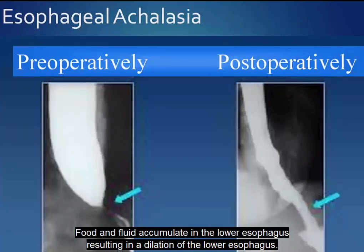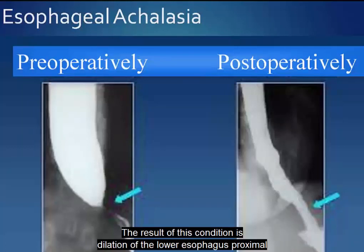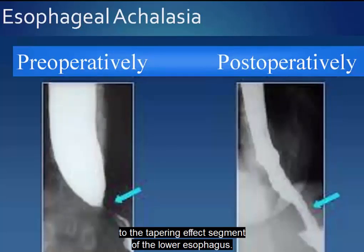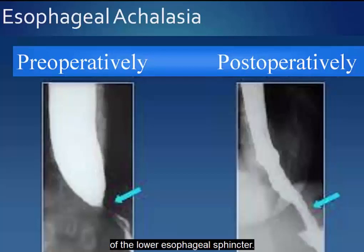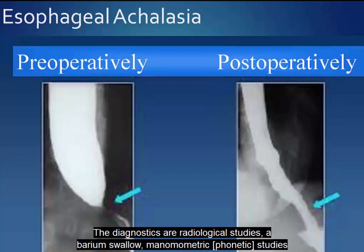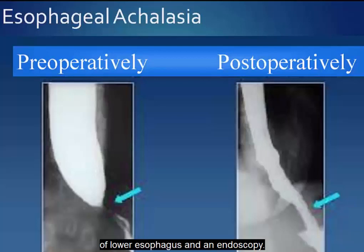Food and fluid accumulate in the lower esophagus, resulting in dilation of the lower esophagus proximal to the tapering segment. There is a selective loss of inhibitory neurons, resulting in unopposed contraction of the lower esophageal sphincter. Diagnostics are radiological studies, a barium swallow, manometric studies of the lower esophagus, and endoscopy.